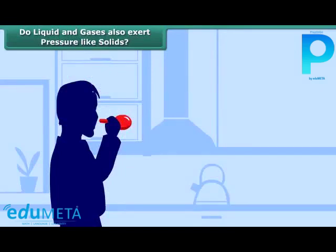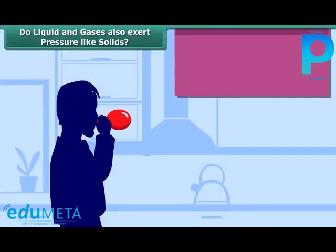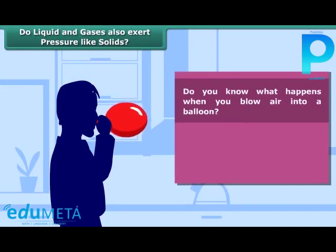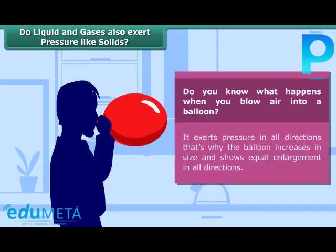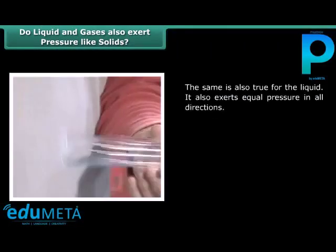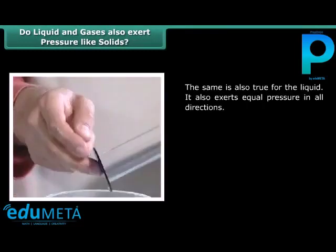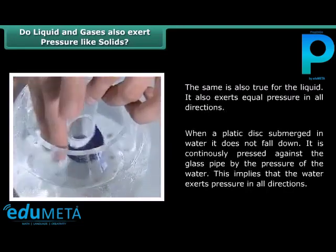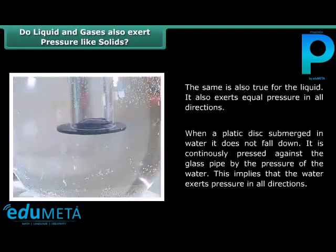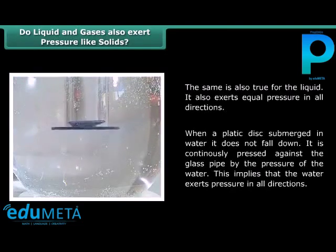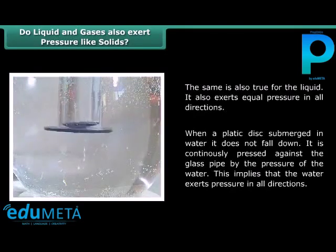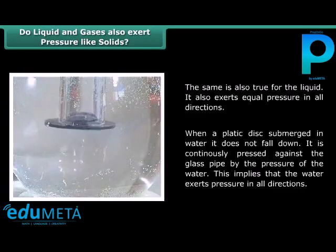Do liquids and gases also exert pressure like solids? When you blow air into a balloon, it exerts pressure in all directions — that's why the balloon increases in size and shows equal enlargement in all directions. The same is also true for liquids; they also exert equal pressure in all directions. When a plastic disc is submerged in water, it does not fall down but is continuously pressed against the glass pipe by the pressure of the water, implying that water exerts pressure in all directions.